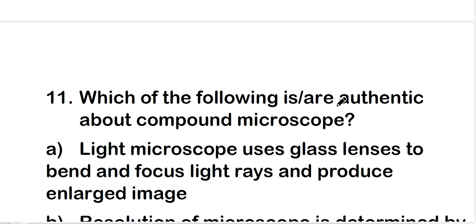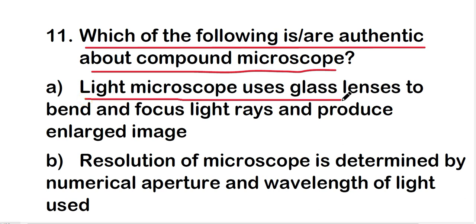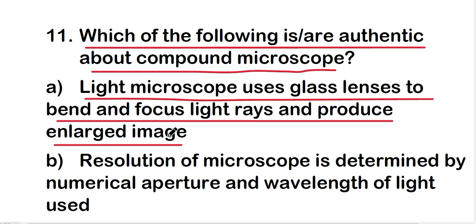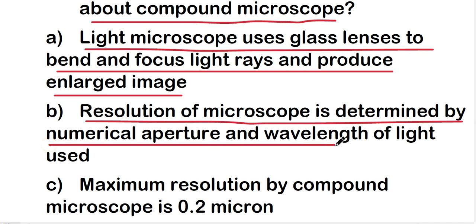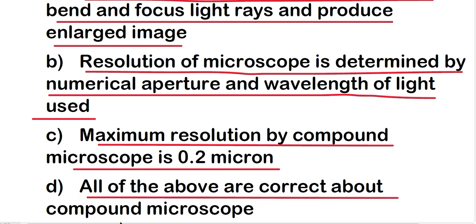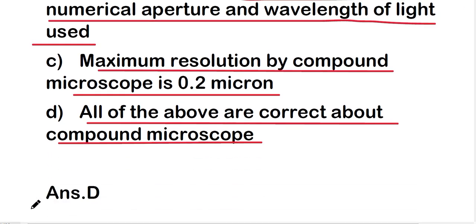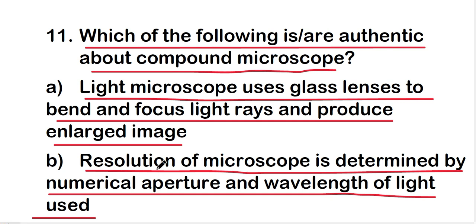Which of the following are authentic about the compound microscope? Option A: a light microscope uses glass lenses to bend and focus light rays and produce an enlarged image. Option B: the resolution of a microscope is determined by numerical aperture and wavelength of light used. Option C: the maximum resolution by compound microscope is 0.2 micron. Option D: all of the above. The right answer is option D — all of the above are correct about compound microscope.